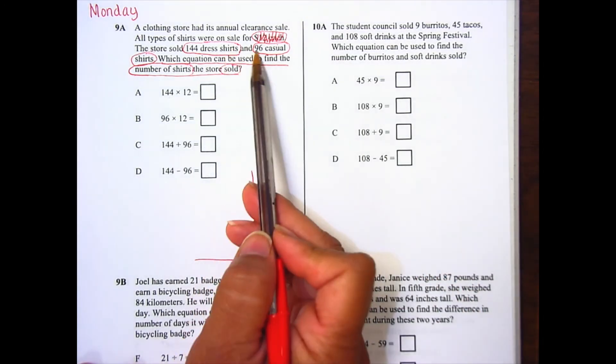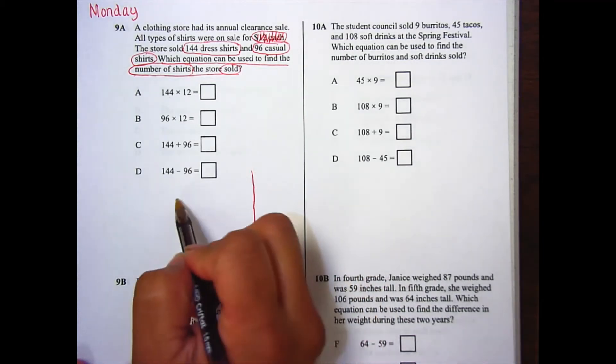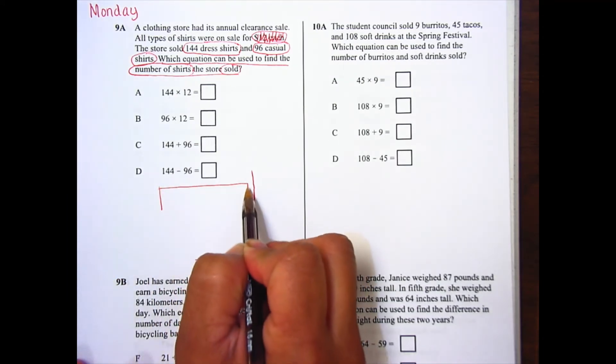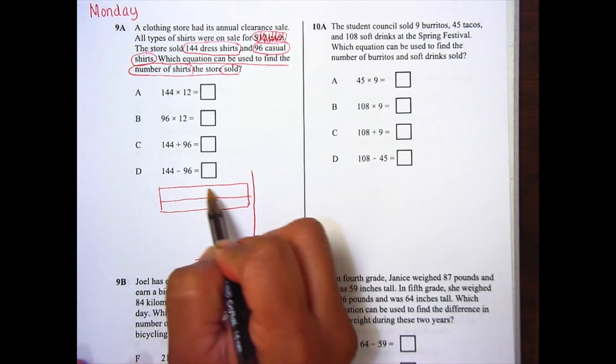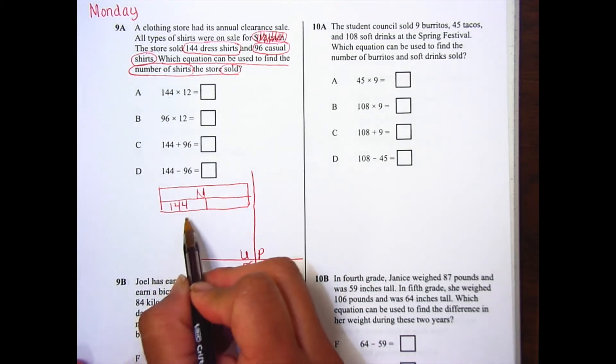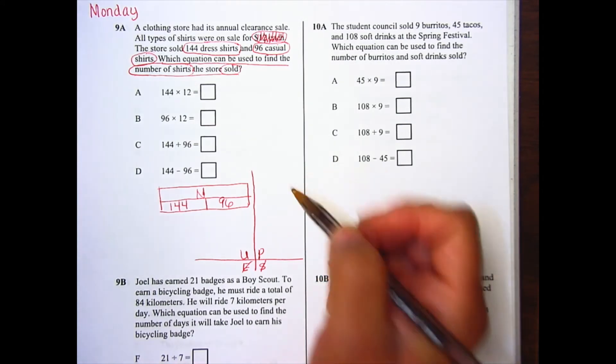So what do I have to do with these two numbers? Am I combining them or am I separating them? Right now we are combining because we do not have a total. So I'm going to go ahead and draw my strip diagram. And we are solving for n, the number of shirts. So I can do 144 dress shirts, 96 casual shirts.